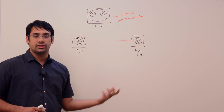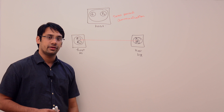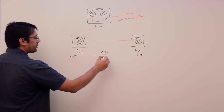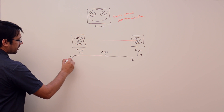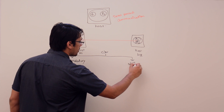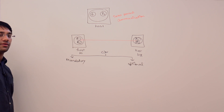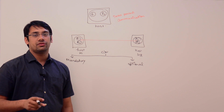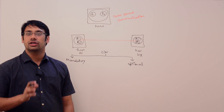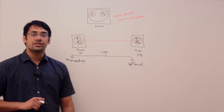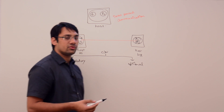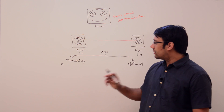For these processes to communicate with each other, there are some mandatory functionalities and some optional functionalities required in a computer network. Mandatory functionalities are those which must be present — if you don't have them, you will not be able to perform effective communication.